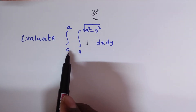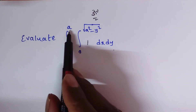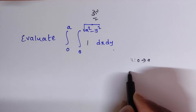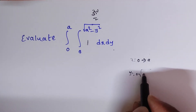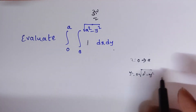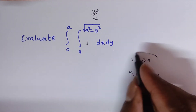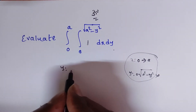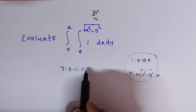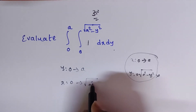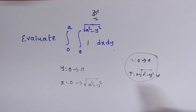First, observe: if we consider x as going from 0 to a and y from 0 to √(a² − y²) — is y a function of y? No, so you should not take it that way. Instead, consider y limits as 0 to a, and x limits as 0 to √(a² − y²). Is x a function of y? Yes, so we can take it this way.